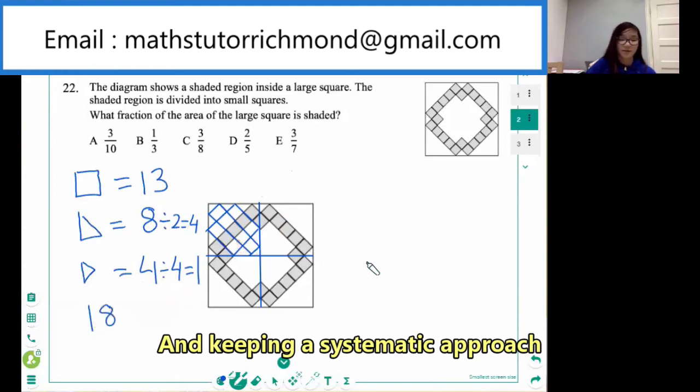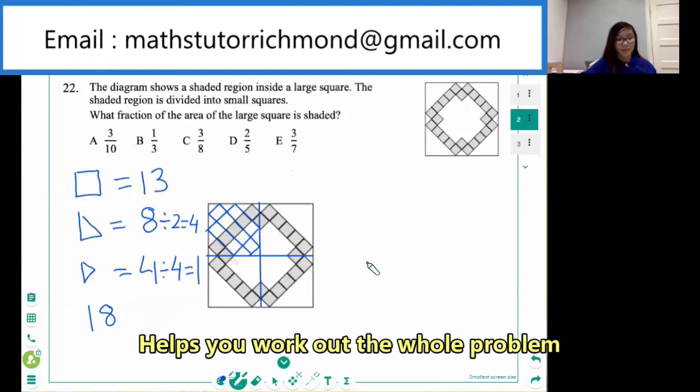So that's how many squares there are within a quarter of the large square. And then now we can count the black squares. There are five whole squares and two halves, therefore meaning there are six.